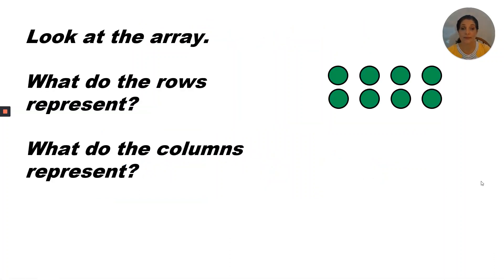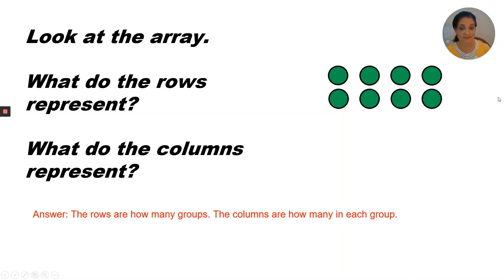Look at the array. What do the rows represent? What do the columns represent? I have two rows and four columns. The rows represent how many groups there are, so there are two rows or two groups. The columns are how many are in each group, so I have two rows with four in each group.